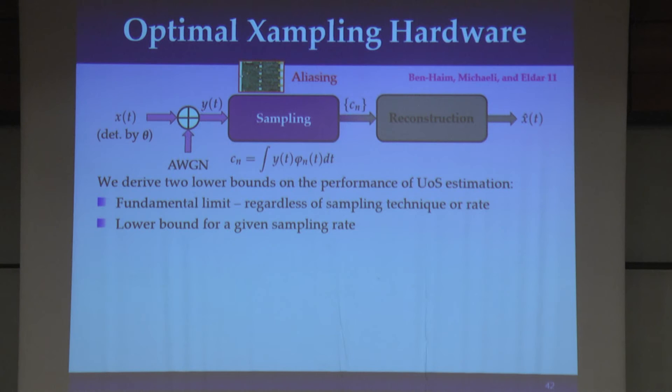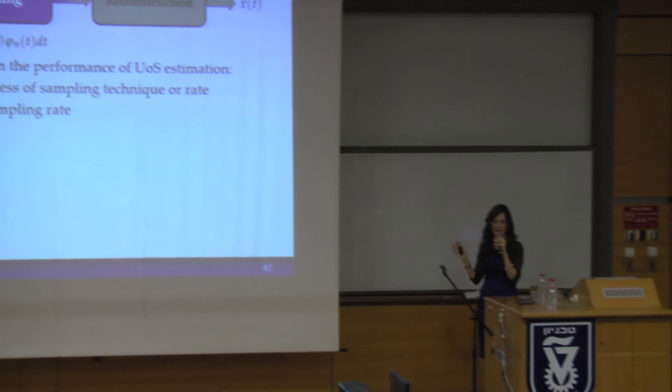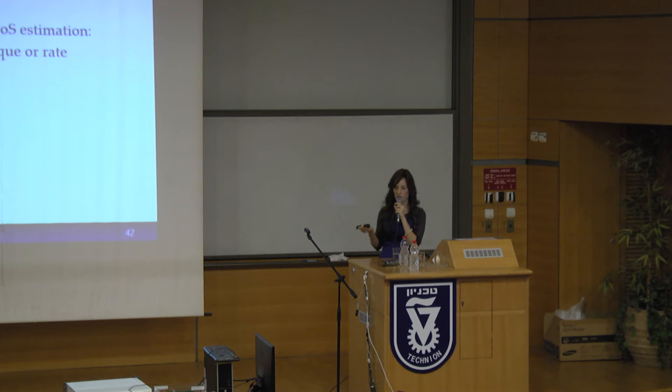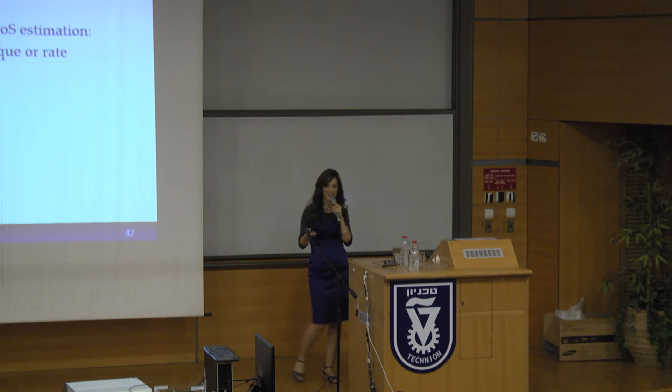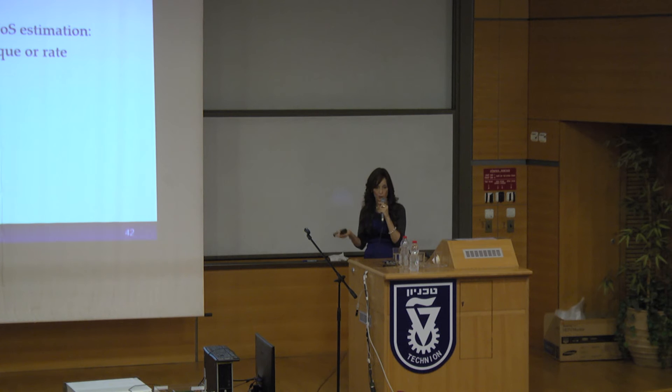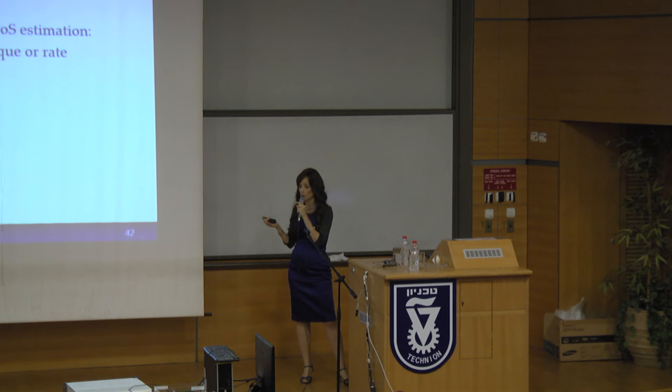One thing we didn't talk a lot about is that we need aliasing, and we said we could roughly get it by filtering — but the question is, is there some optimal way to design this aliasing? There are clearly benefits to aliasing, but also disadvantages, and the main one is behavior in the presence of noise. Aliasing is going to enhance our noise, and therefore it's very important to design this aliasing in a way that we don't introduce too much noise into the system.